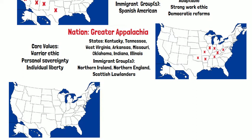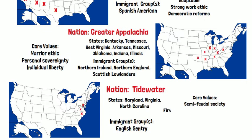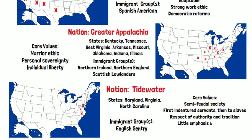The next nation is Tidewater. This was settled by English gentry. The states include Maryland, Virginia, and North Carolina. The core values are associated with those of a semi-feudal society. They first had indentured servants and then moved to slavery. There is respect for authority and tradition, little emphasis on equality, and little participation in politics.